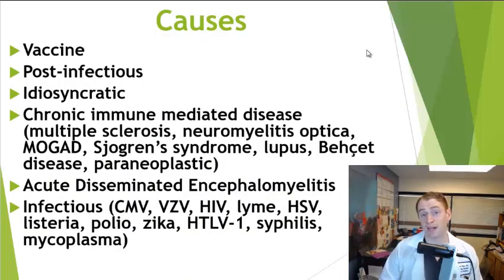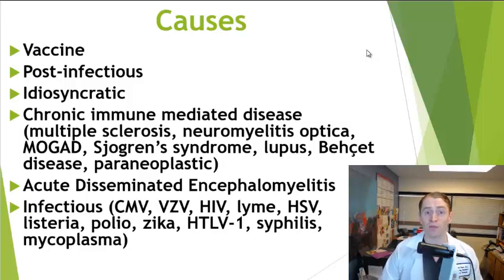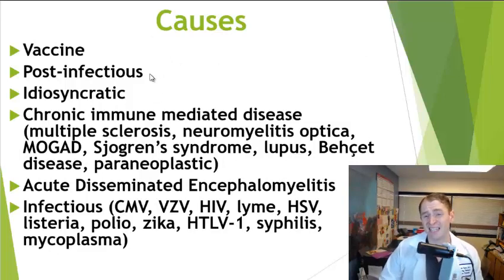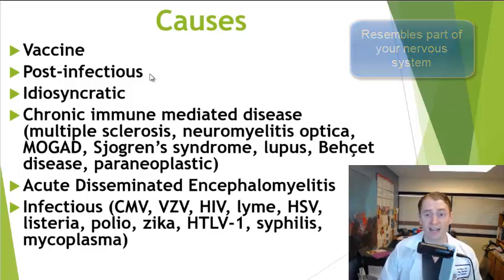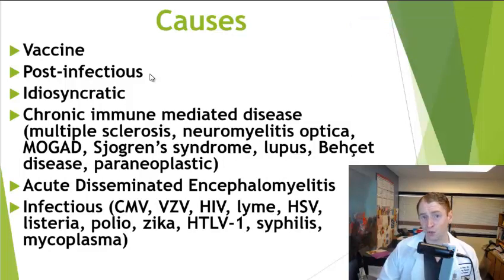There are many different causes of transverse myelitis. Sometimes it can be a uniphasic or one-time event, and sometimes it can be part of a chronic autoimmune disease. Some examples of one-time events are when it happens after a vaccine or after an infection. The immune system sees a foreign antigen, and something about the proteinaceous structure resembles part of your immune system, triggering an autoimmune result. This usually occurs about 10 days to 2 months after the inciting event and usually does not recur.